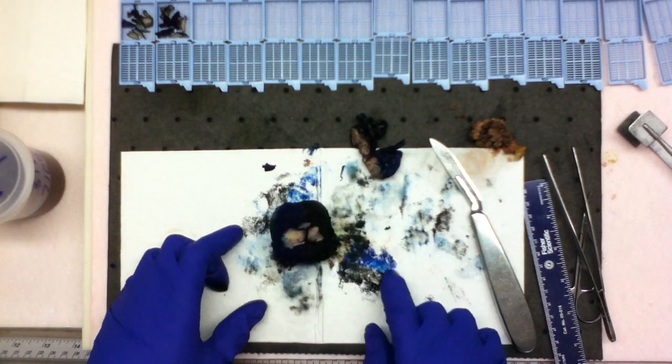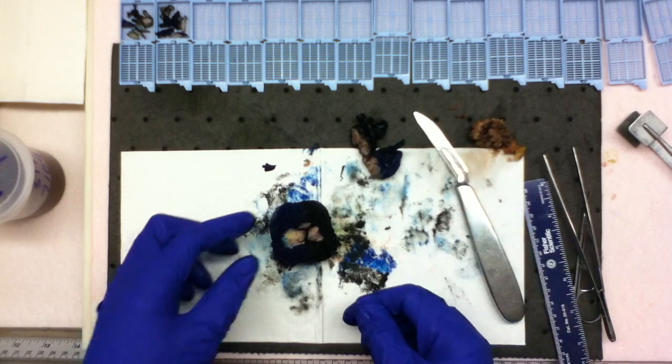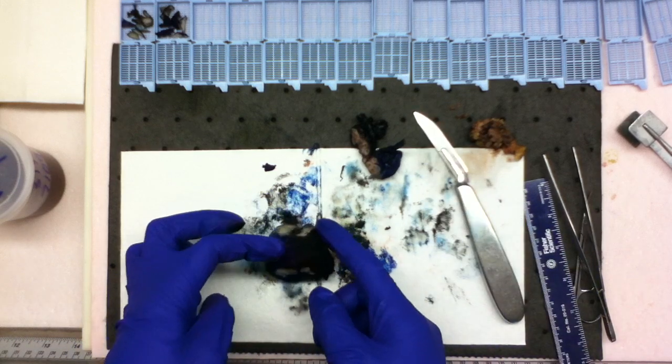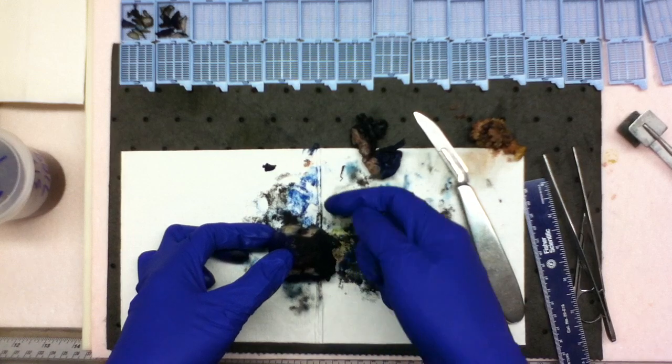The prostate has a trim weight of 86.2 grams. The prostate is inked blue black along the right, blue along the left, and serially sectioned from apex to base.